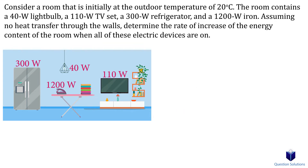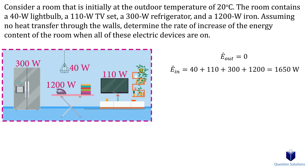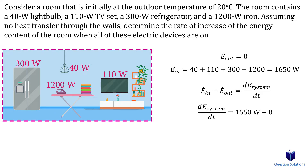In this problem, we have a room at a temperature of 20 degrees Celsius, then we turn on a few electric devices. We need to figure out the rate of increase of the energy content in the room if there is no heat transfer through the walls. Since there is no heat transfer through the walls, our energy out will be zero. Note that the temperature given is unnecessary for this question. The energy in would be the addition of all the electrical devices. The rate of increase in energy is equal to energy in minus energy out, giving us 1,650 watts.